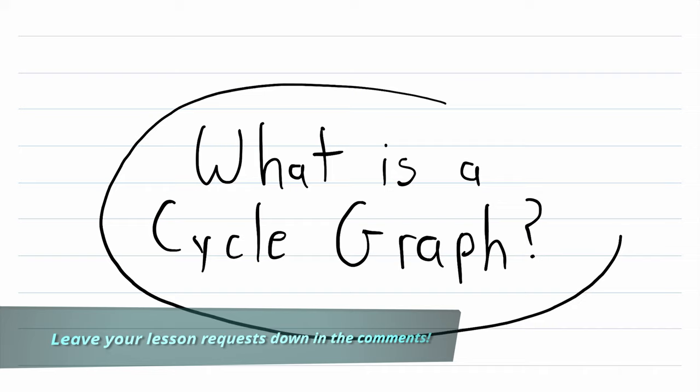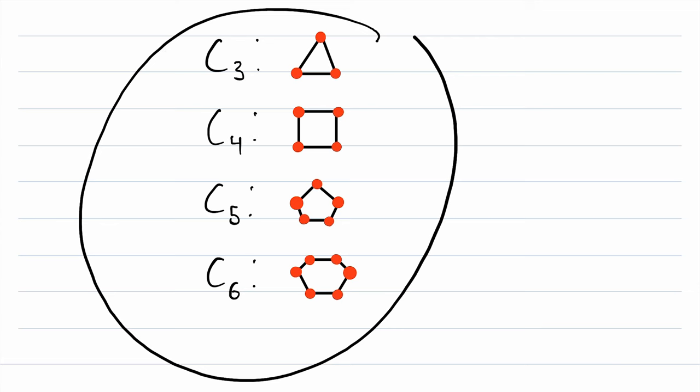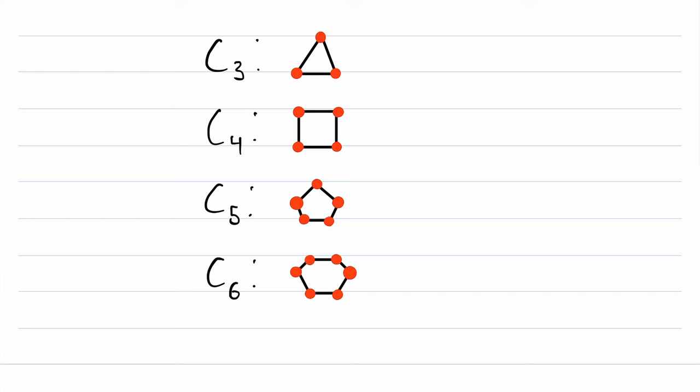So let's get right into it, and what we see here are the first four cycle graphs. You could probably come up with the definition of a cycle graph just by seeing these first few examples. You can see that they all have this sort of cyclic nature to them, hence their name, cycle graphs. And you can see that each cycle graph is denoted with a capital C and with a subscript that refers to the order of the graph.